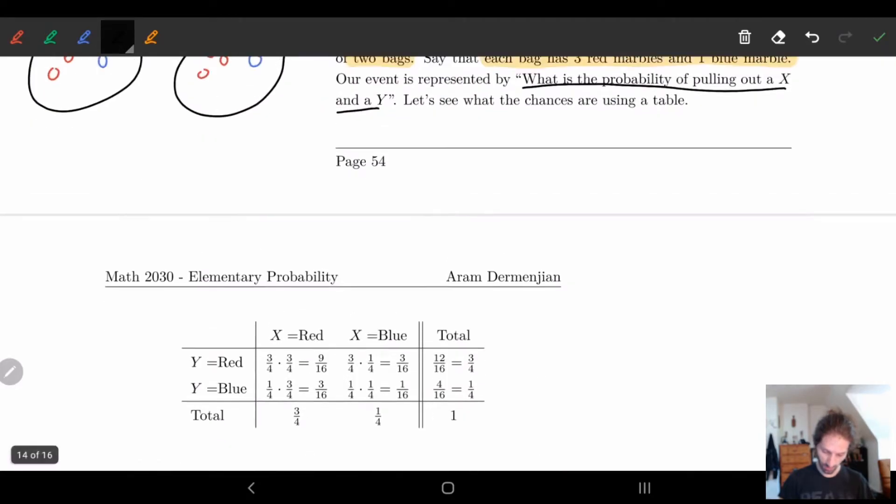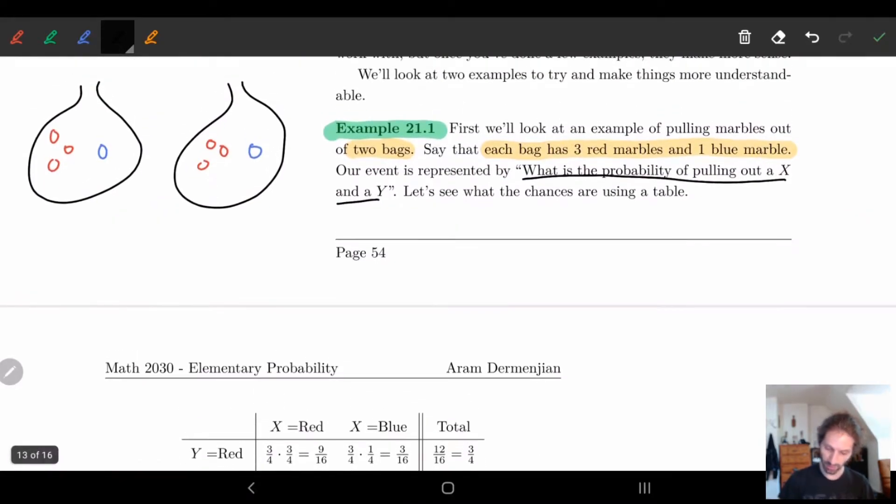Let's see the chances of pulling out an x out of bag one and a y out of bag two. So here we kind of have, we're going to do a little chart to kind of help us write things down.